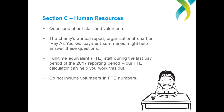Links to the calculator are available in the AIS guide and directly from the annual information statement form via the help links. The ACNC will accept your best estimate when it comes to these figures, just in case you're not 100% sure of exact numbers. So if you can work out the exact figures, great — if not, provide your best estimate.